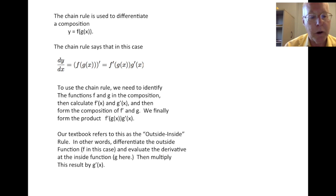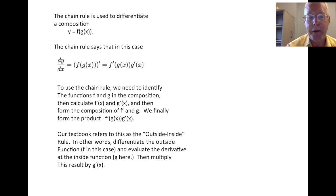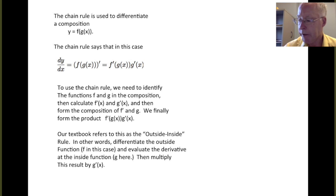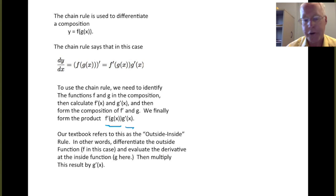Our textbook often refers to this as the outside-inside rule. We differentiate the outside function — that's f in this case — and evaluate that derivative at the inside function — that's g — then multiply the result by g prime. The f prime is the outer function, we compose that with g to get f prime of g, and then multiply by g prime.